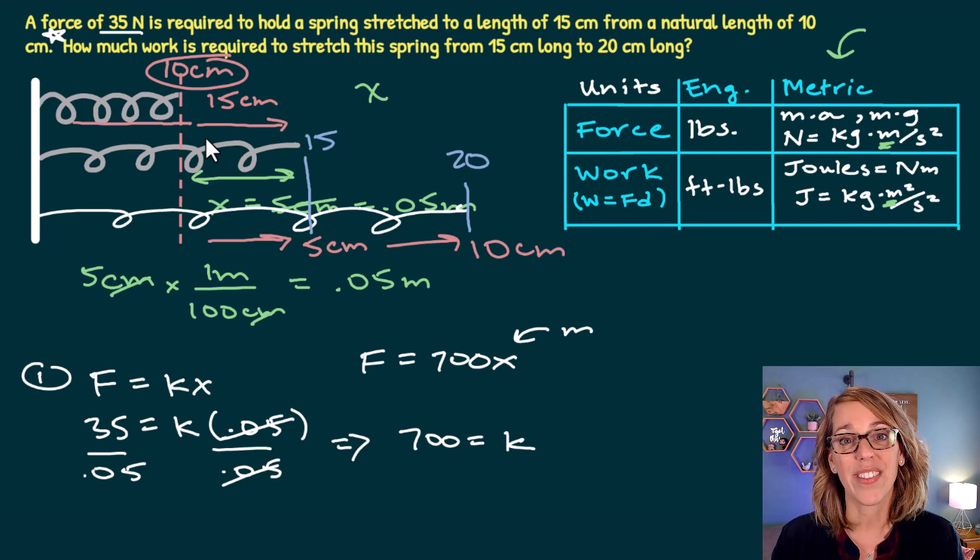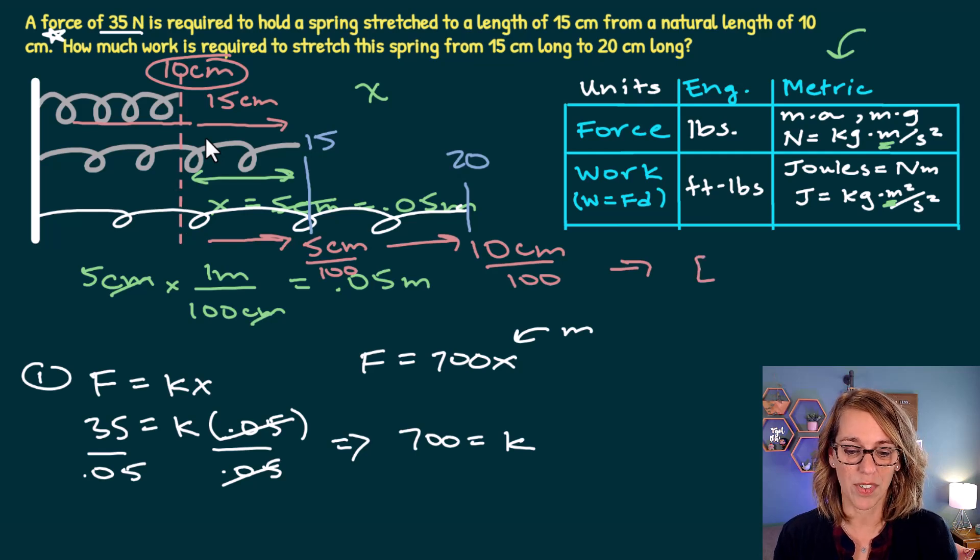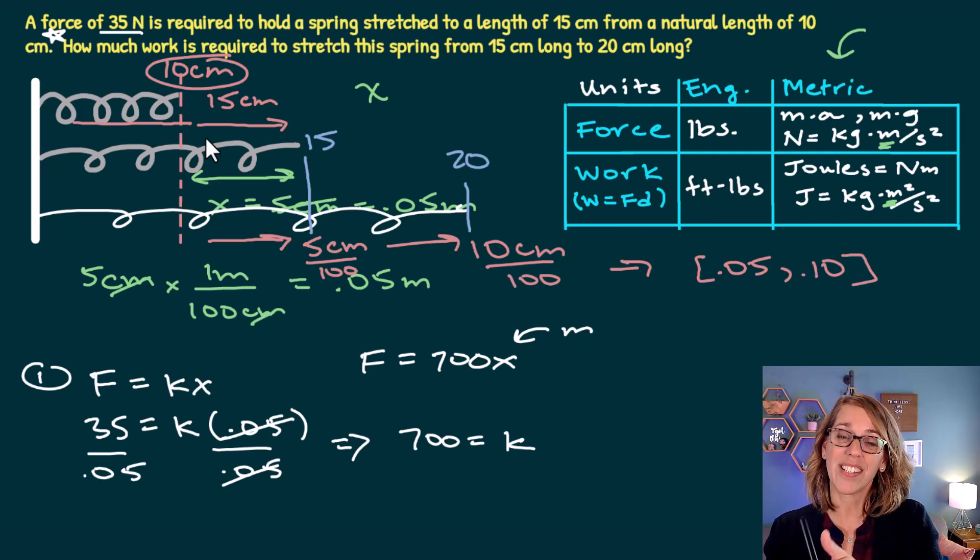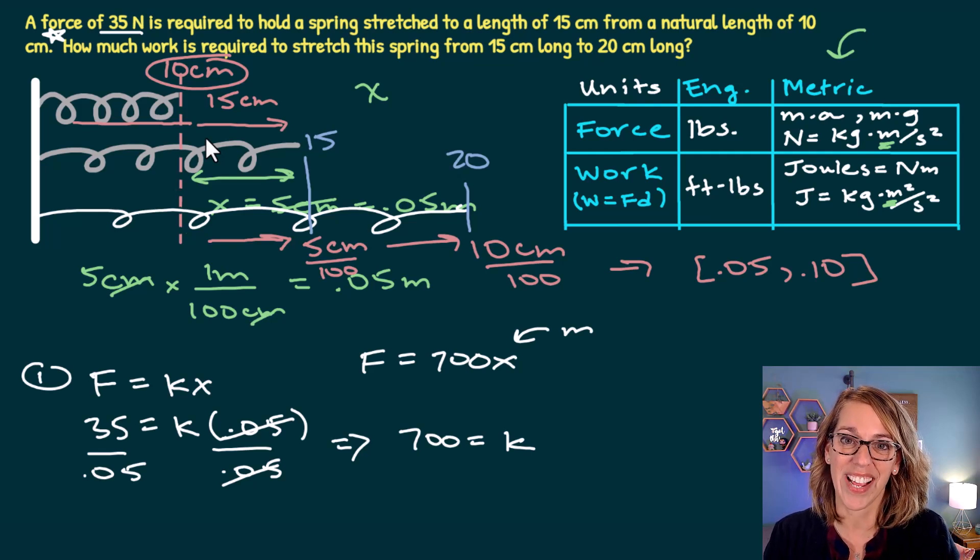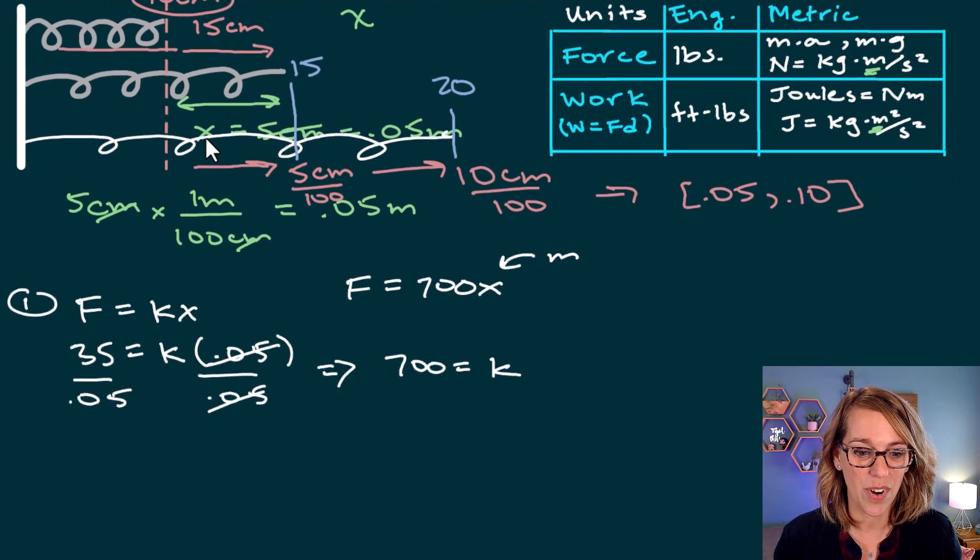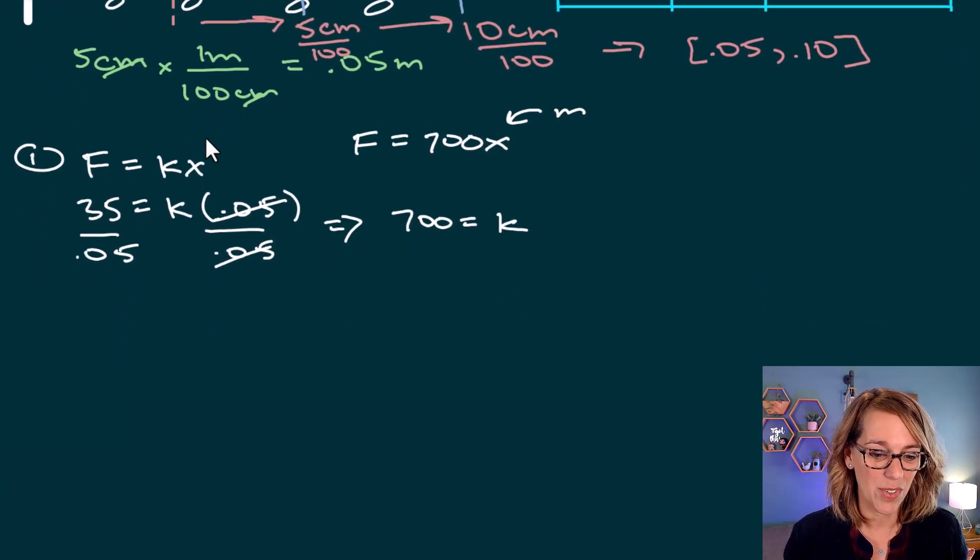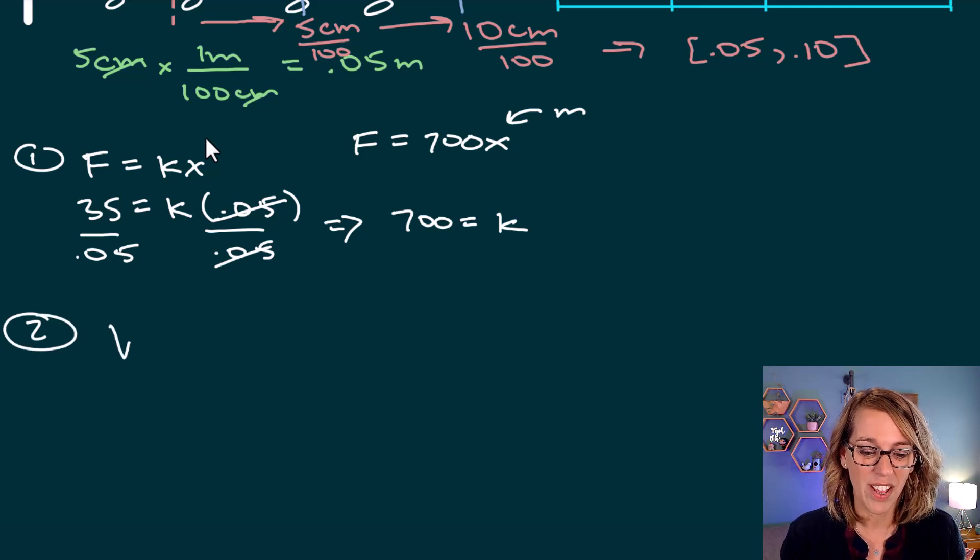Now I do know that I want everything in terms of meters instead. So I need to divide both of these by 100, both of these by 100. And that's going to put me on the interval 5 divided by 100 is 0.05. And 10 divided by 100 is 0.10. These are my limits of integration. I'm going to stretch that starting at a distance of 0.05 meters beyond the natural length to a distance of 0.10 beyond the natural length. Let's put this together in our work integral. So in our integral, this is step number two. Now I've got, I think just about everything that we need. Work is equal to the integral force times dx.